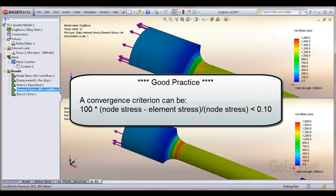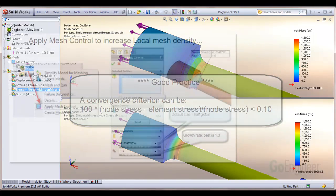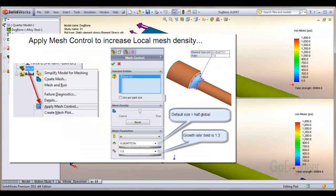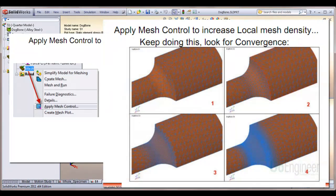It is good practice to assess the difference in nodal stress and element stress. A convergence criterion can be that the two should be within 10%. In many cases you can do this by increasing the mesh density locally in areas of high stress gradients by applying a mesh control. You run each case and compare results to the previous case.